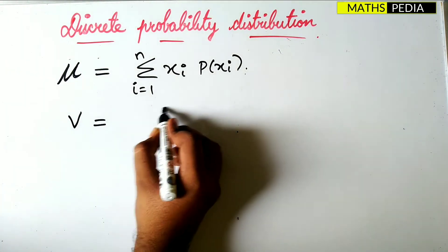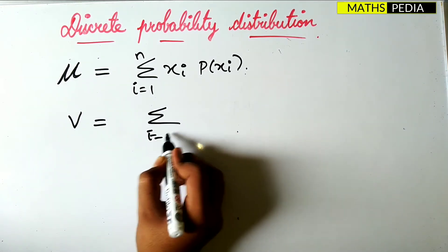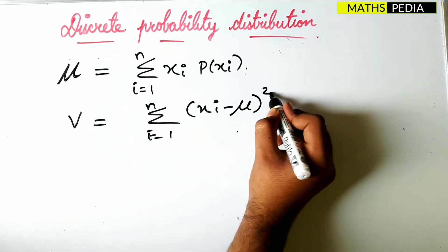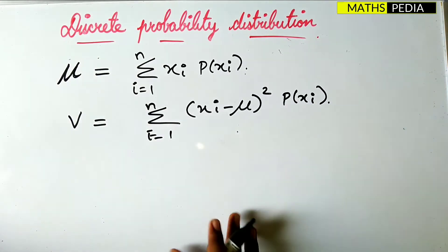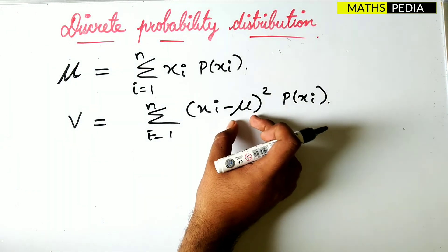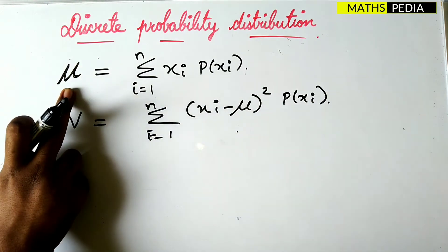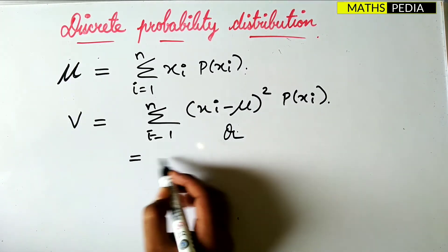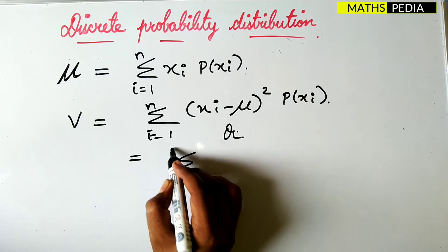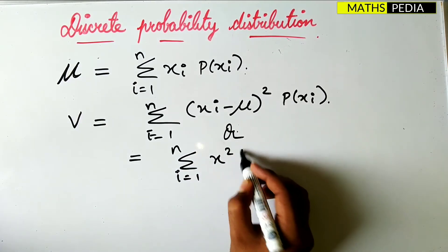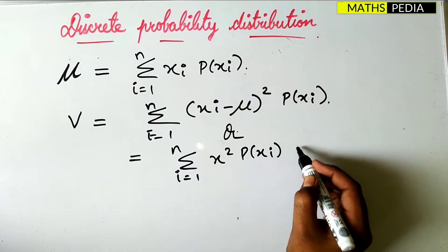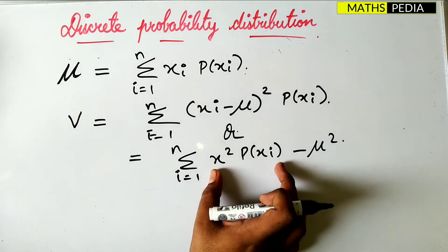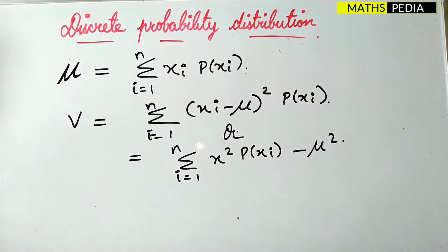To find variance, the formula is the summation from i=1 to n of (X_i minus mu) squared times P(X_i), where mu is the mean value. So first you must find the mean, then calculate the variance. An equivalent simplified formula is: summation of X_i squared times P(X_i) minus mu squared. Both formulas give the same result.